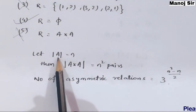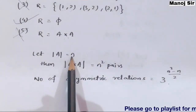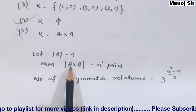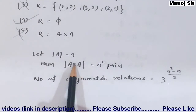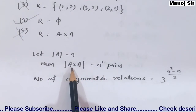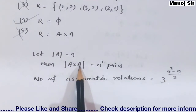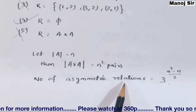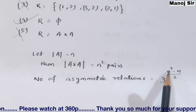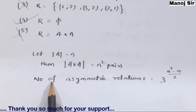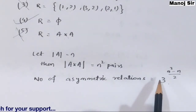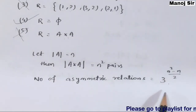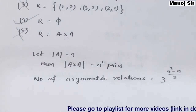Now for the number of asymmetric relations: if set A has cardinal number n, then A × A has cardinal number n². The number of asymmetric relations on A is: 3 raised to the power (n² − n) / 2. Remember this formula. Thank you.